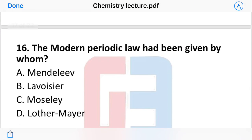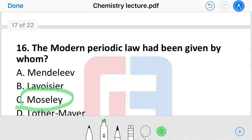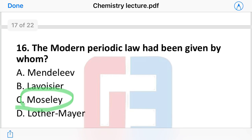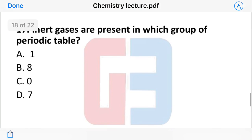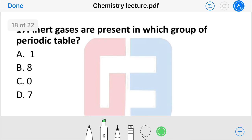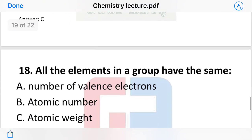Next question: the modern periodic law has been given by whom? The options are: Mendeleev, Lavoisier, Moseley, or Lothar Meyer. The answer is option C — Moseley. Additionally, inert gases are present in group 0 of the periodic table.